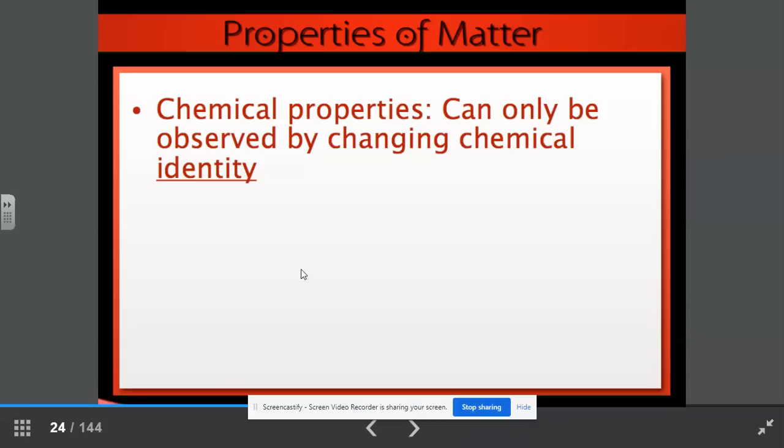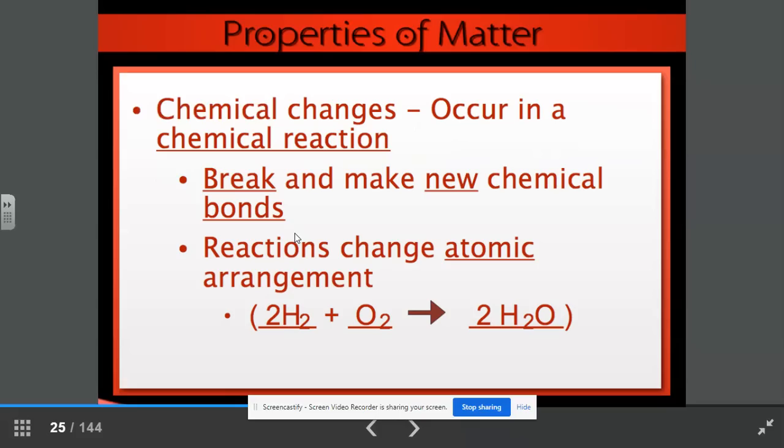Chemical properties. These can only be observed by changing the chemical identity. For example, we have chemical changes. These occur in a chemical reaction. What happens is we break the new bonds, new chemical bonds are formed. Reactions change the atomic arrangement. Remember when we learned about balancing chemical equations, right? We're not creating or destroying any matter, but we are rearranging. The atoms rearrange to form new compounds.